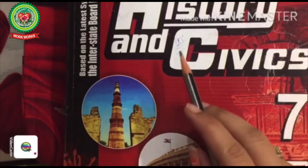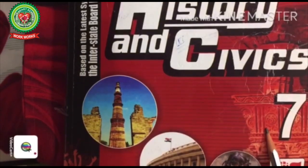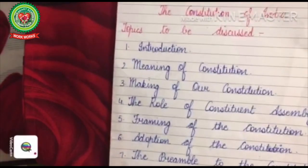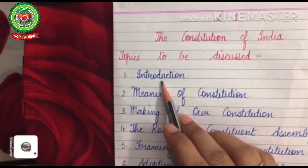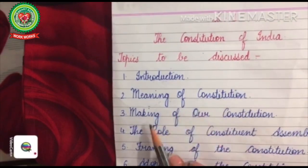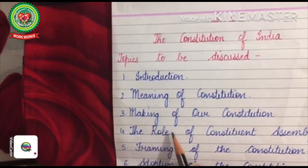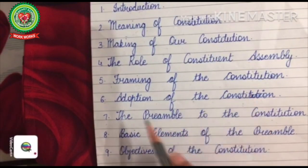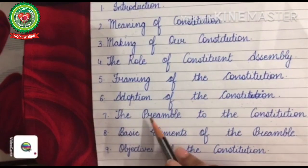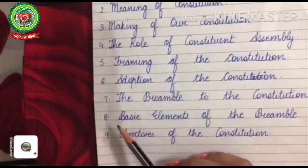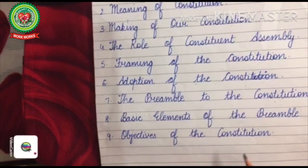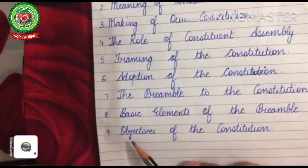Good morning students. Take out your History and Civics book, Class 7. We have started lesson number one of Civics: the Constitution of India. The topics we have discussed are: introduction, meaning of Constitution, making of our Constitution, the role of Constituent Assembly, framing of the Constitution, adoption of the Constitution, the Preamble, basic elements of the Preamble, and objectives of the Constitution.